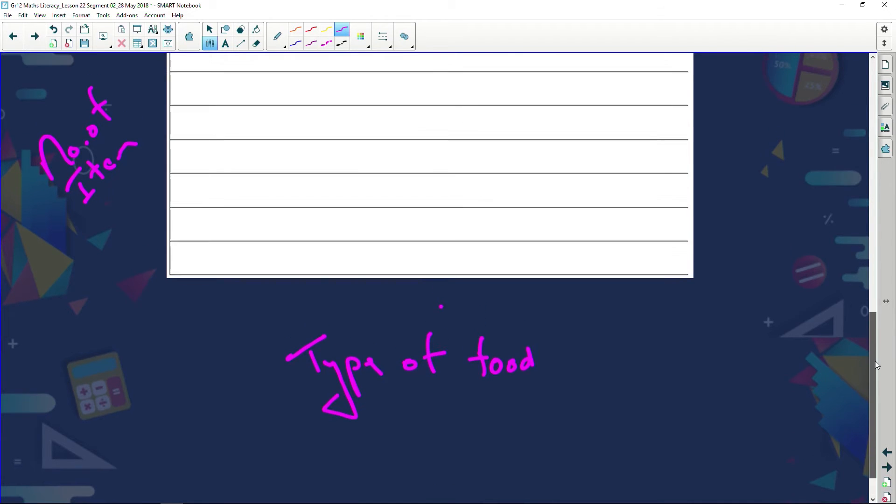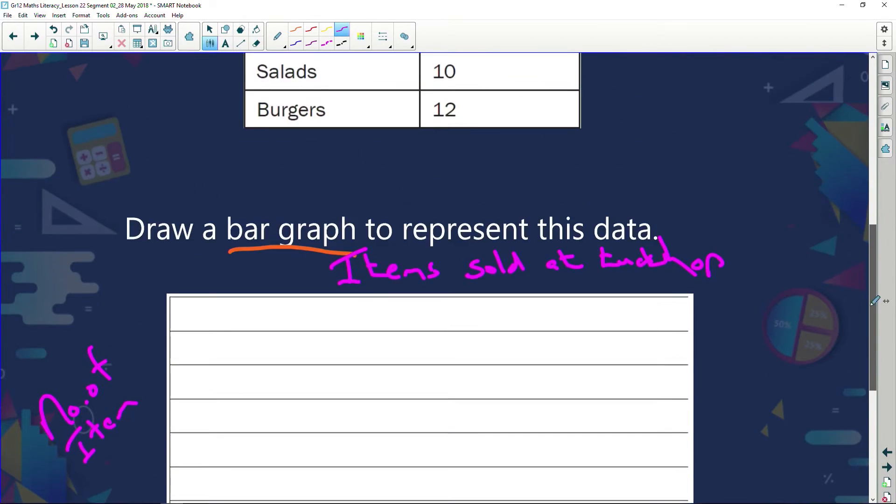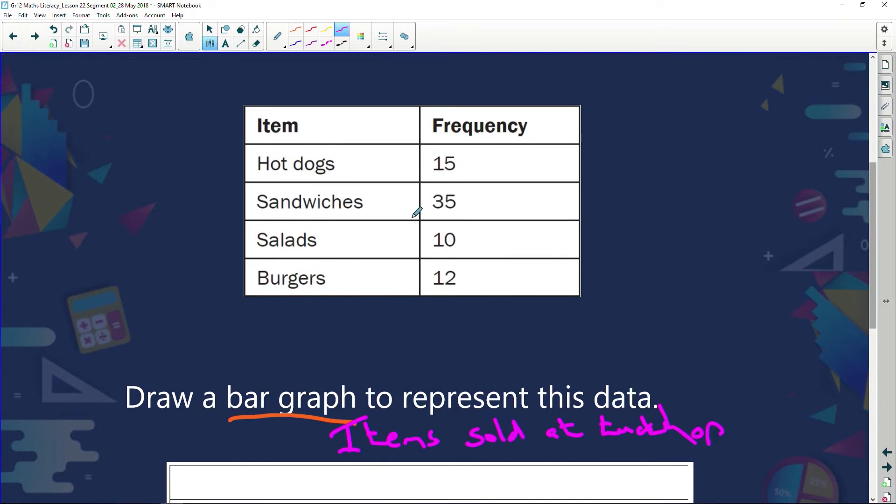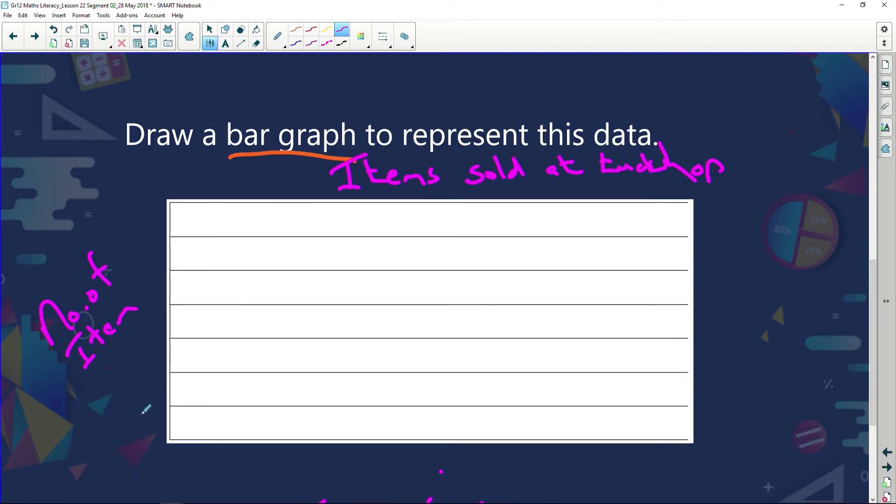Now, number of items. I can see I've got one, two, three, four, five, six, seven lines. How many items do I go up to? I go up to 35. If I say 35 divided by seven, I've got five. So I'm going to say the number of items and I'm going to say that's five items, 10 items, 15 items, 20 items, 25 items, 30 items, and 35 items.